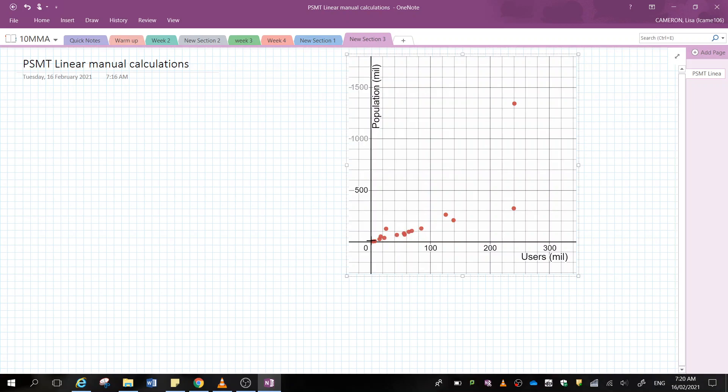So obviously, this will be easier for you to do by hand. Now, I think that that's a pretty good estimate of a line of best fit. So I'm going to leave it there.